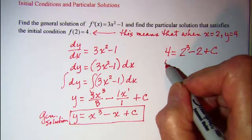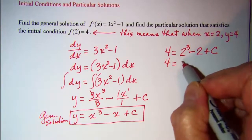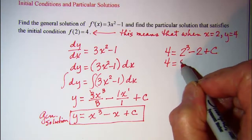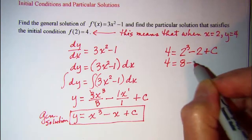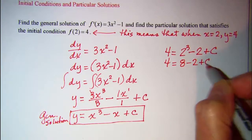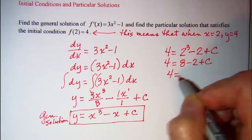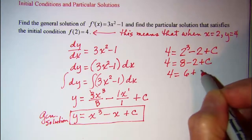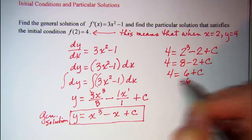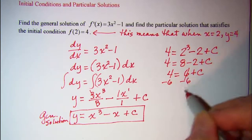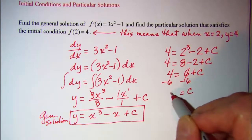So 4 equals 2³ is 8 minus 2 plus c. 4 equals 6 plus c. Subtract 6 from both sides, so c is equal to negative 2.